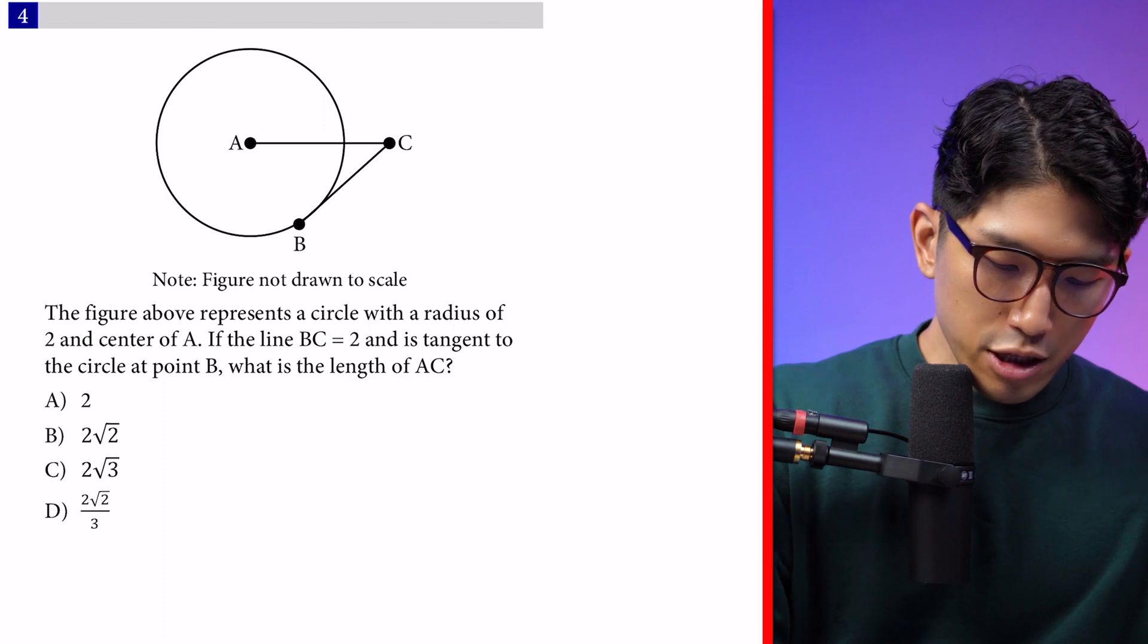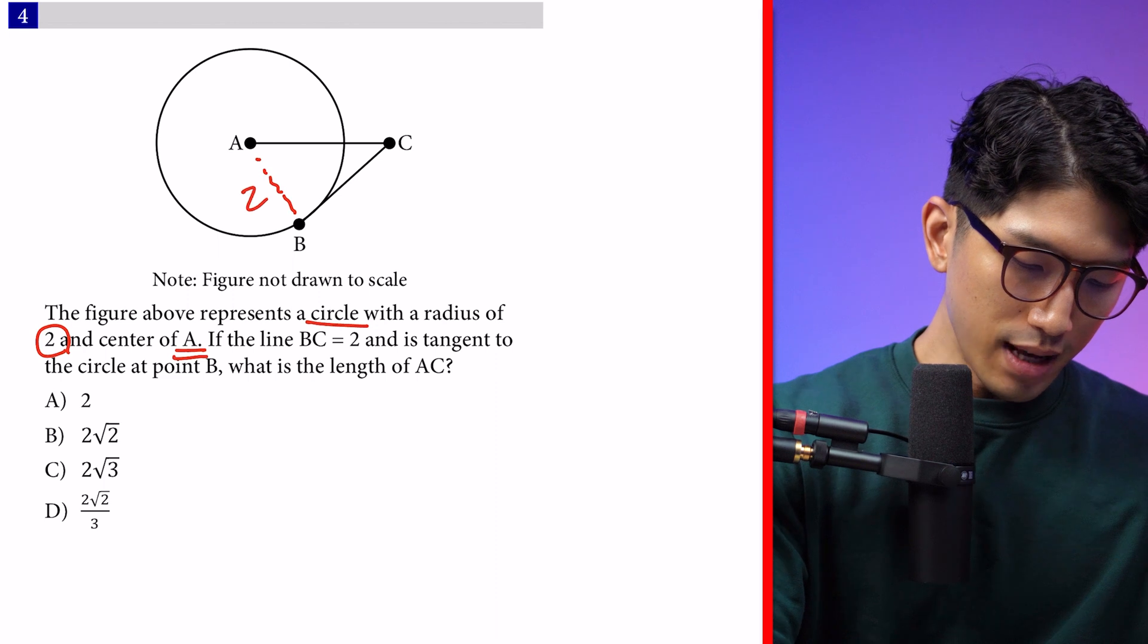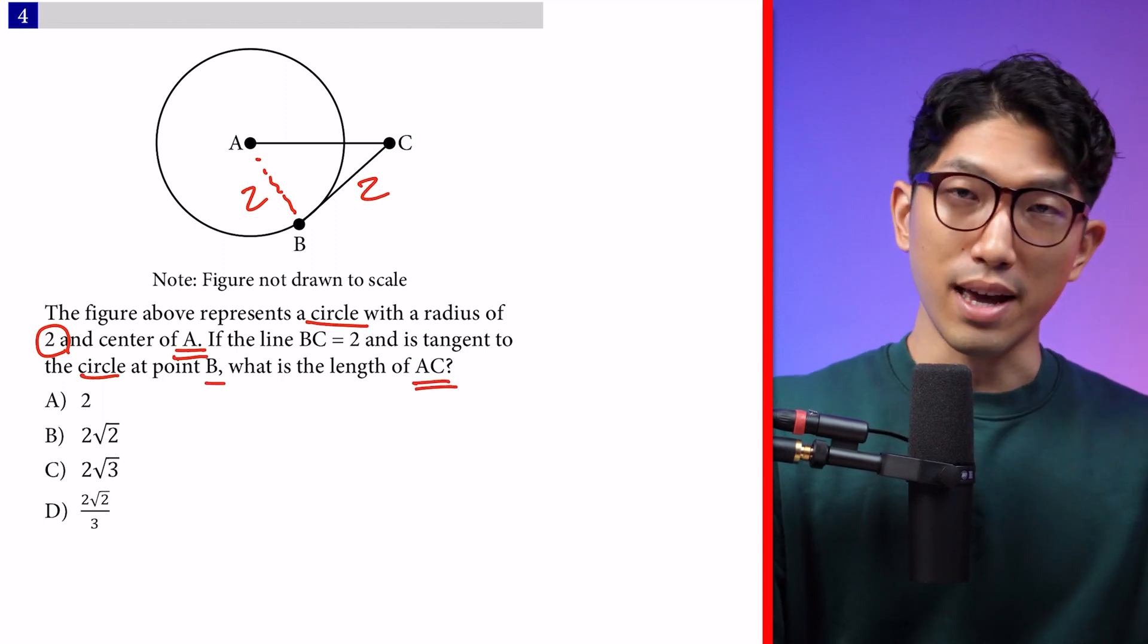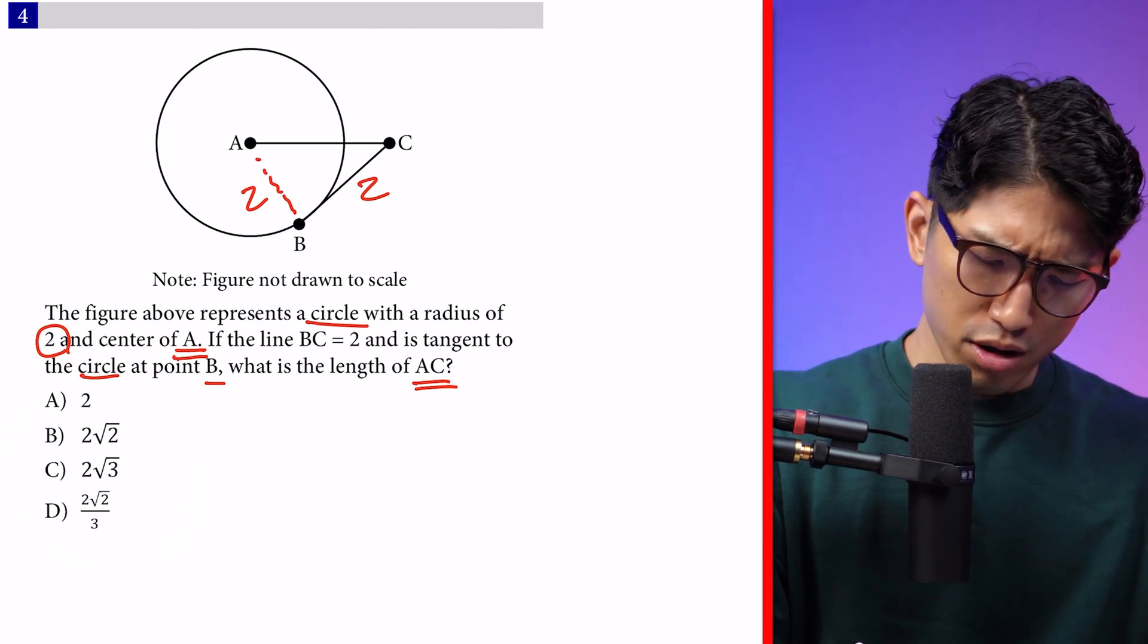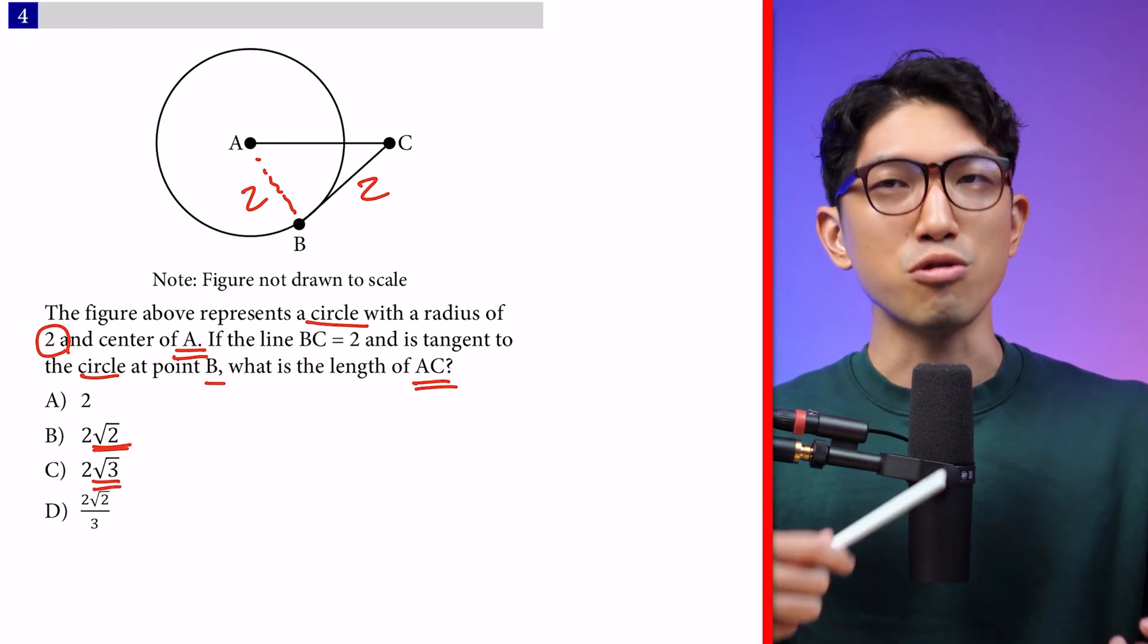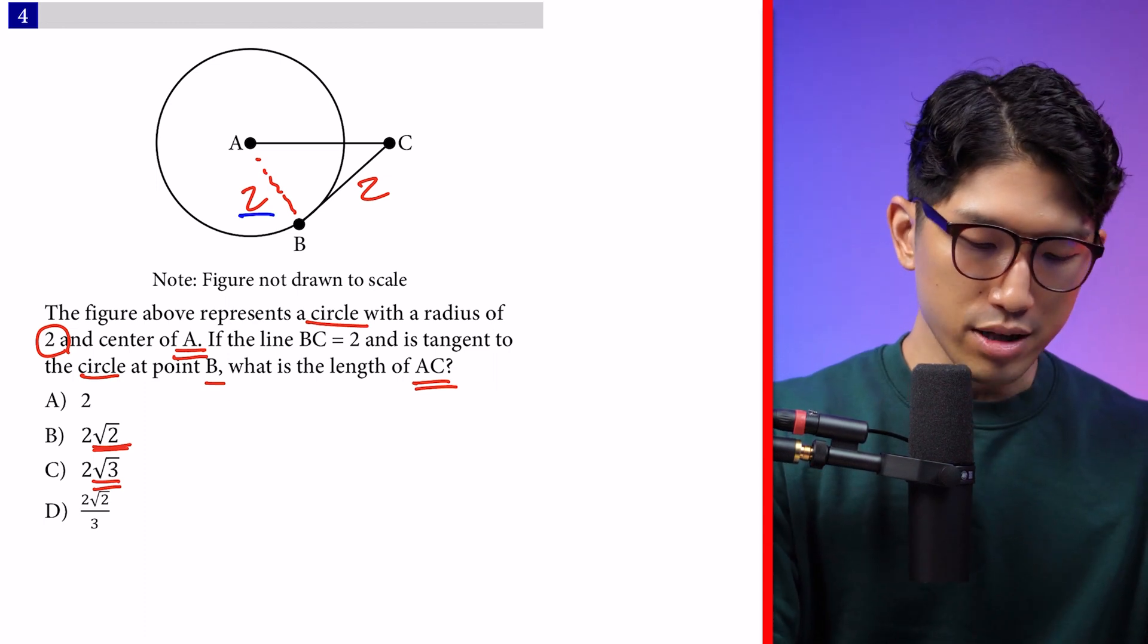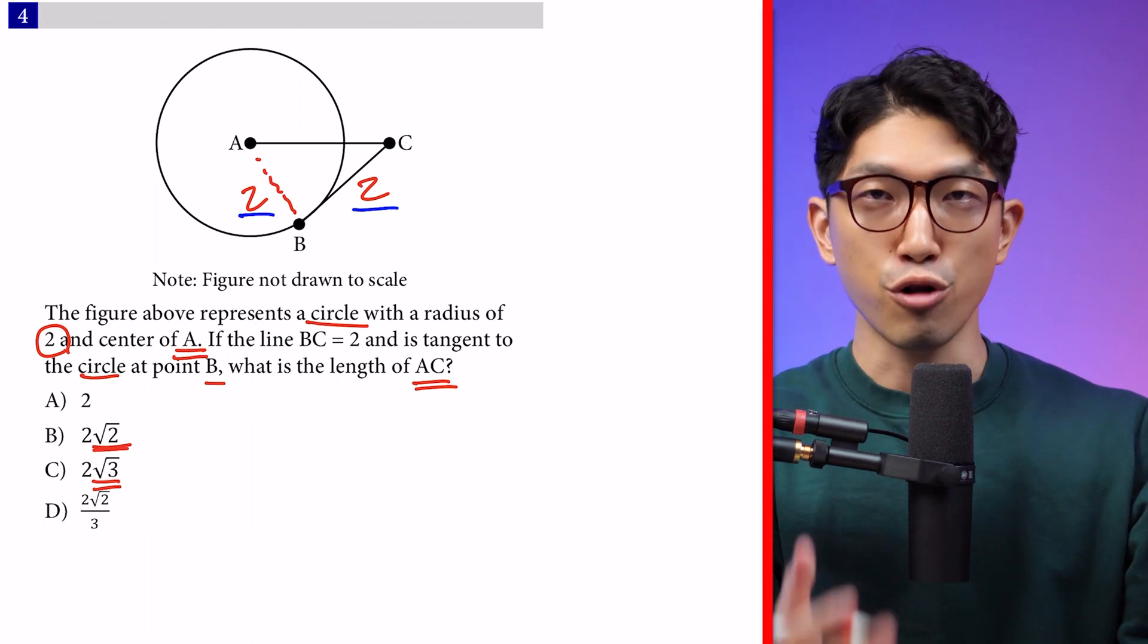Let's move on to the last question. The figure above represents a circle with a radius of 2 and center of A. Always mark what the question is telling you. If line BC equals 2 and is tangent to the circle at point B, what's the length of AC? Before I go into the question, I look at the answer choices and recognize the question has radical 2 and radical 3, so chances are it's testing special right triangles. Sometimes it might not, but I'll keep that in the back of my head. So we have it's 2 there, 2 there, and it's tangent at point B.